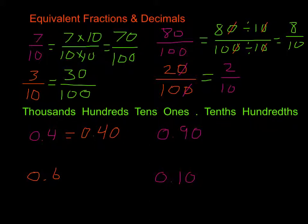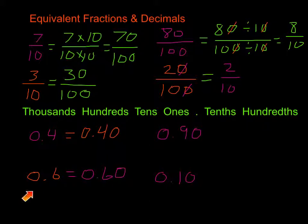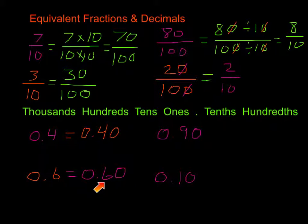On our next one, we have 0.6. That's tenths — we want hundredths, and since we don't have anything in the hundredths place, we are going to put a zero there. So 0.6 is equal to 0.60, or 6 tenths is equal to 60 one-hundredths.